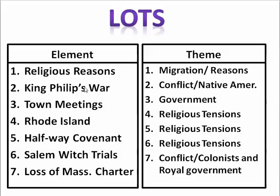Social Studies U.S. History Standard 1B. We're going to do the last one here: the loss of the Massachusetts Charter 7. The theme is conflict between the colonists and the royal government.